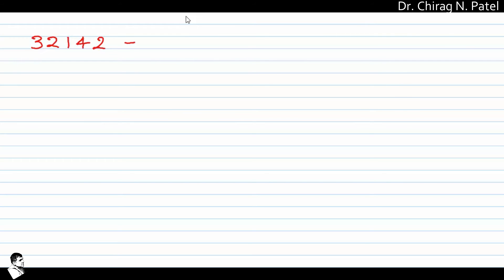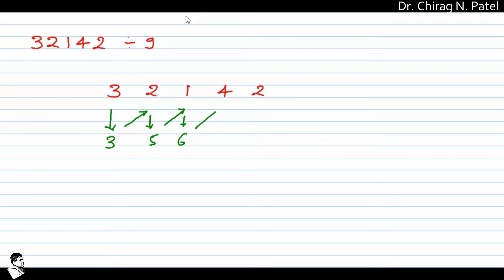Let us take another problem: 3, 2, 1, 4, and 2, again divided by 9. Rewrite that number following the same pattern: 3, 2, 1, 4, 2. First digit as it is — 3. Then 3 plus 2 is 5, 5 plus 1 is 6, 6 plus 4 is 10, and 10 plus 2 is 12.